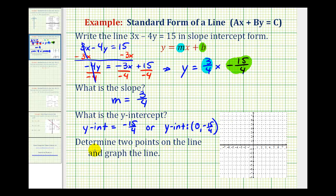And then for the last part, we want to determine two points on the line and then graph the line. And since we are going to have to graph this line, it might be helpful to convert the y-intercept to a decimal. Negative 15 divided by 4 is negative 3.75. So we could write the coordinates of the y-intercept as 0, negative 3.75.